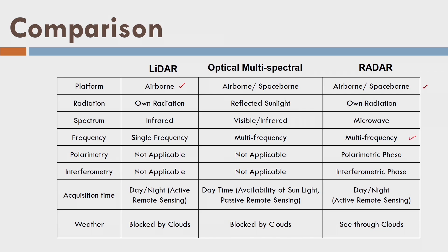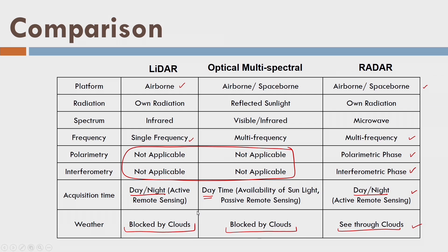Radar is multi-frequency compared to LIDAR, which is only single-frequency. Multi-frequency means multi-wavelength. Moreover, we can use polarimetry and interferometry — the principles of polarization and interference — in the case of radar, which is not applicable for the other two techniques. Since radar is an active remote sensing technique, it can be used day and night, similar to LIDAR, whereas photogrammetry cannot. One fundamental advantage of radar is that it can see through clouds, while optical and LIDAR are blocked by clouds.